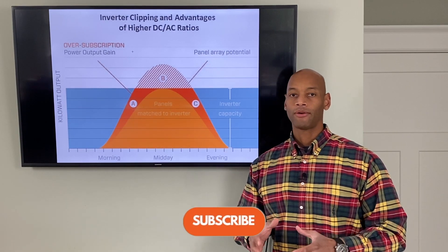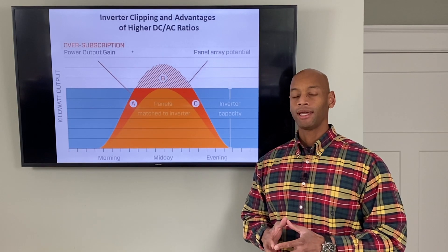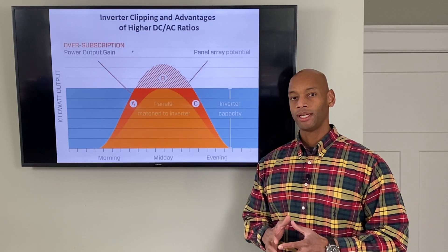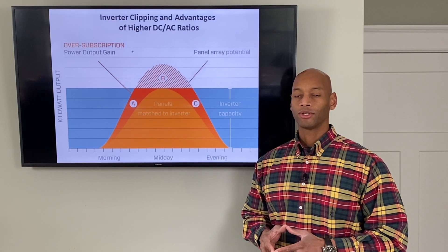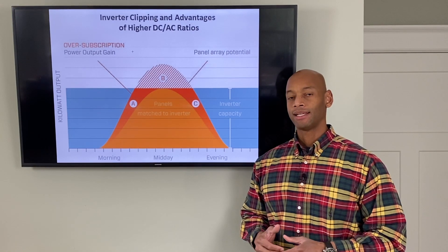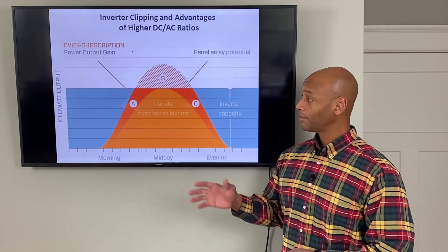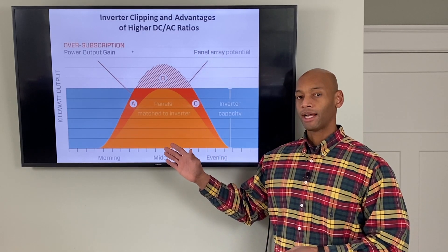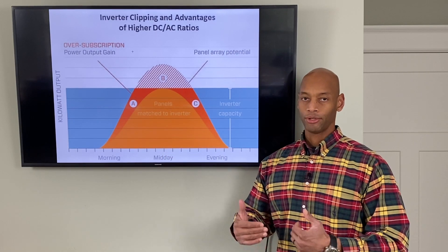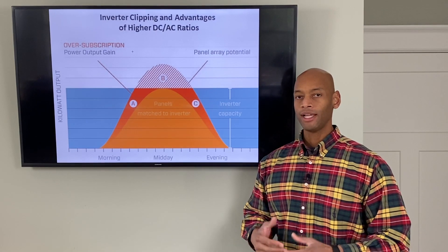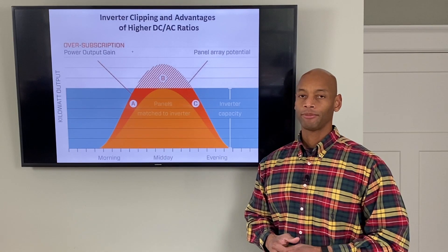One of the questions we often get is: why aren't my solar panels producing at peak power? I'm going to answer that today and explain the difference between the nameplate DC power rating on your solar panels and what's called the Normal Module Operating Temperature power rating, or NMOT power rating. We're also going to look at the difference between the DC rating on the solar panels and the AC rating on the inverter, which is what actually produces usable power for the home — so you can understand exactly how much power to expect from your solar power system.